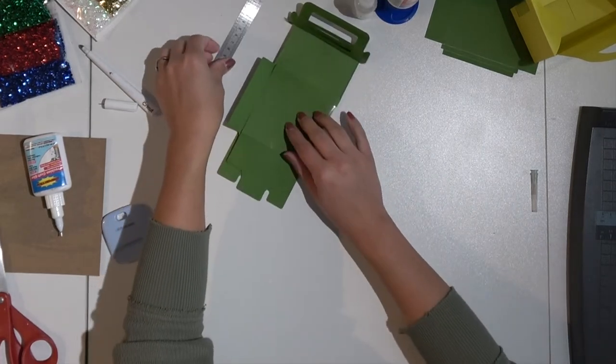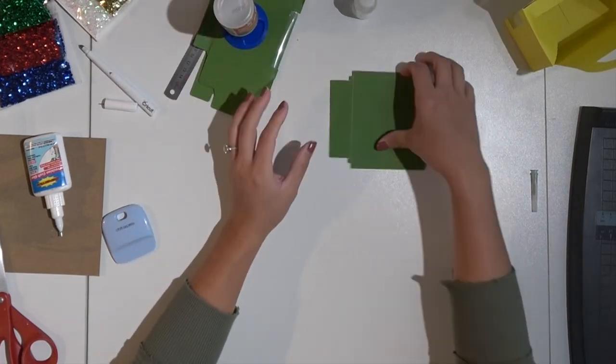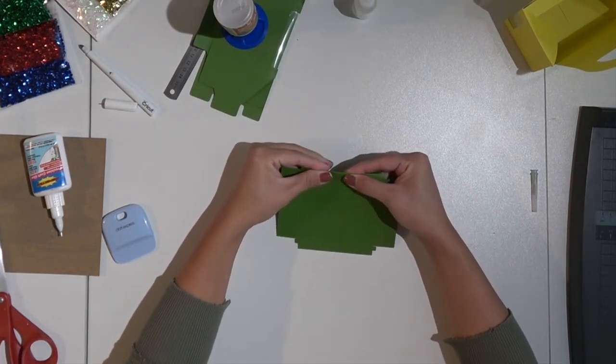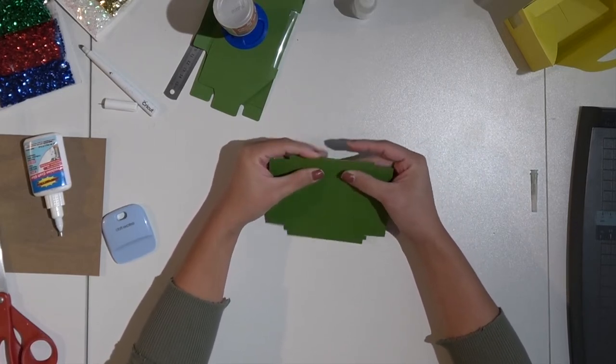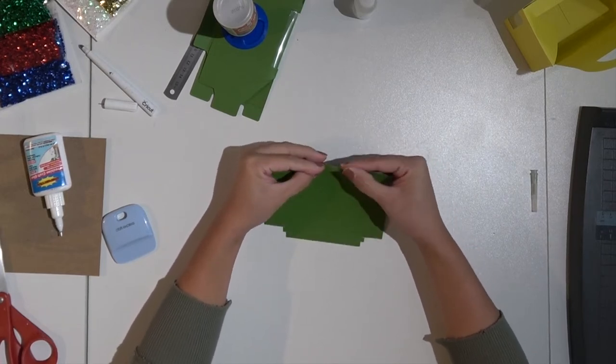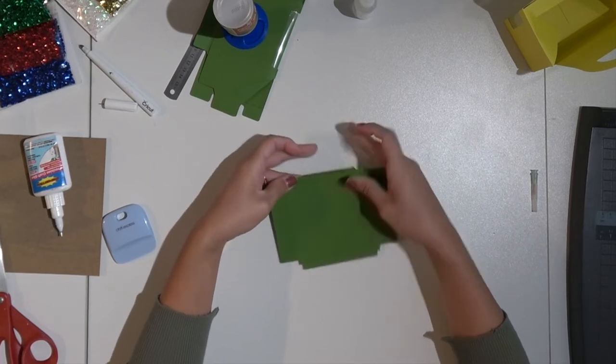As we wait for that to dry, let's start folding in our shaker mechanism. This one you want to do all, so if I fold it in I'm going to fold in on everything. When I'm done folding in I'm going to fold out as well. So we're going to just essentially be breaking the fibers in the paper.